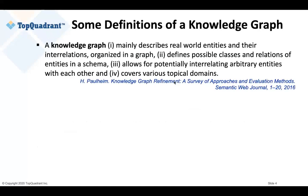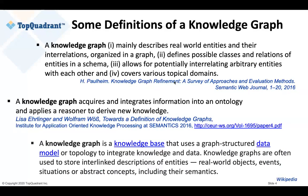I have a few definitions here of a knowledge graph as a term, and they come from different sources. Here's, of course, the source of all truths, also known as Wikipedia. There are some differences in those definitions, but also quite a bit of similarity. Essentially, knowledge graphs provide a way to organize data about real world objects, real world entities in the graph. And together with this data, there's also information about the data model — possible classes and relationships and the schema. In Wikipedia, we talk about semantics of the real world objects, and the middle definition talks about ontology, which is the model, a term used to describe the model behind the data.